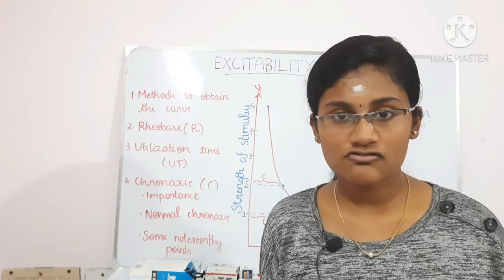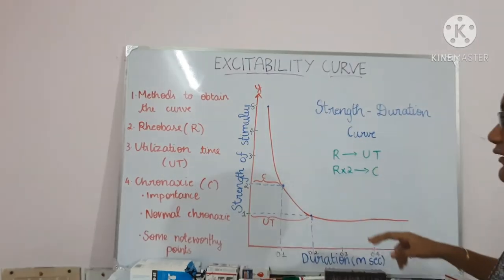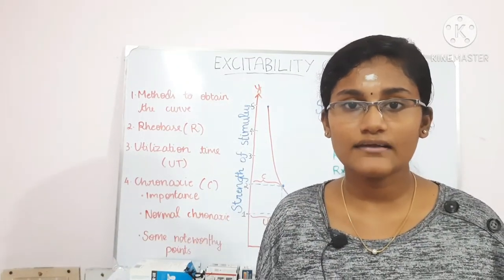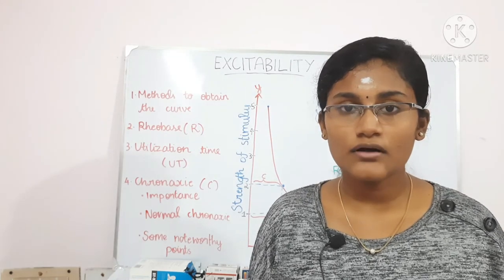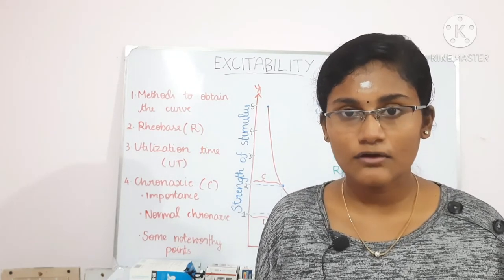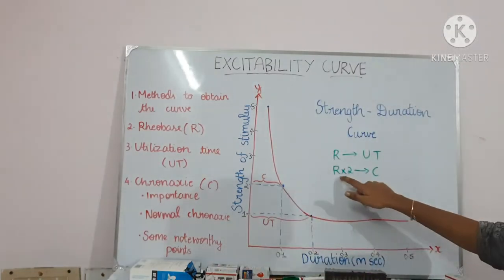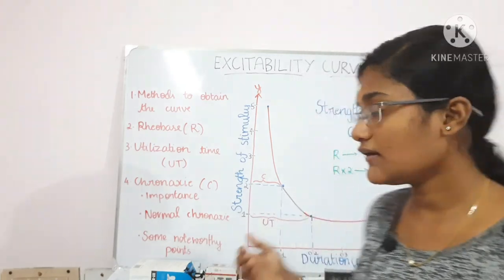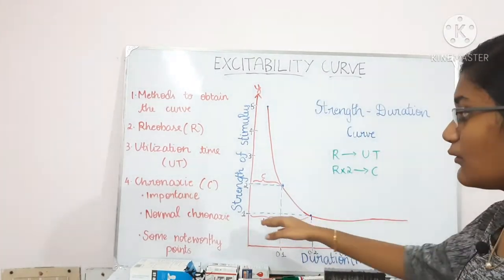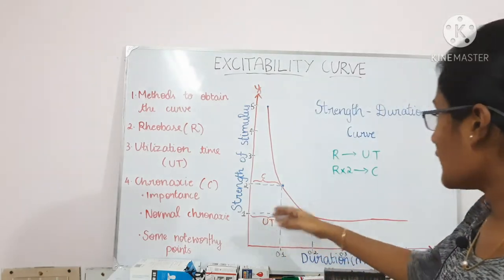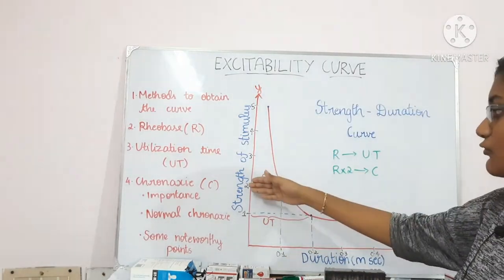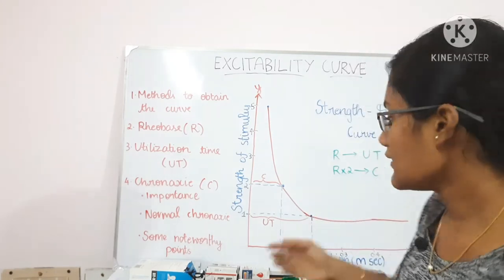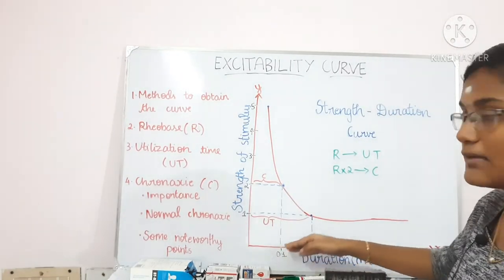Chronaxi is the time taken for the tissue to react to a strength that is double the rheobase strength. If you multiply the rheobase strength by 2, then the time it takes for the tissue to react to that stimulus is the chronaxi. Since the rheobase in this graph is 1 volt, doubling it gives 2 volts, and the chronaxi here is 0.1 milliseconds.